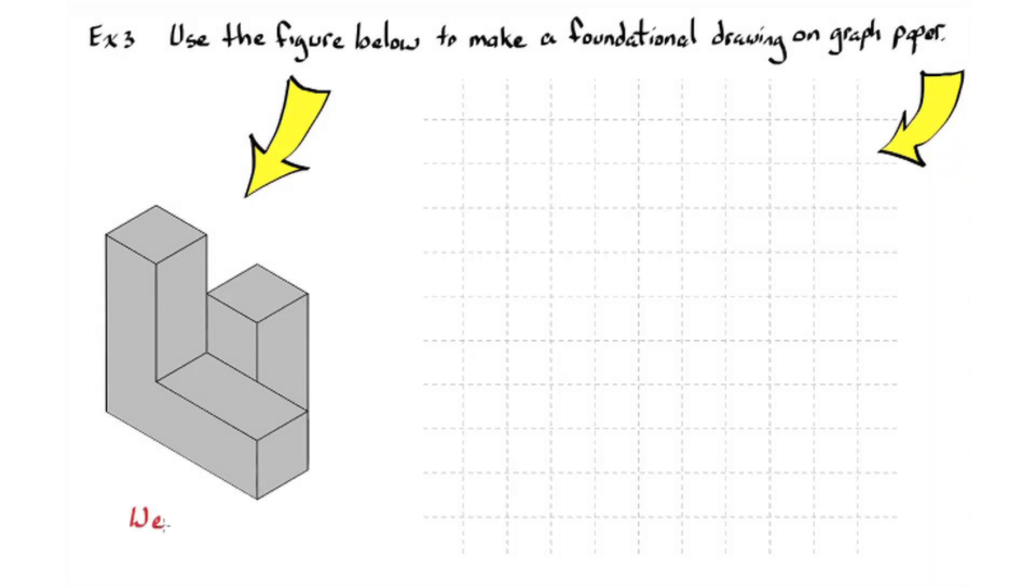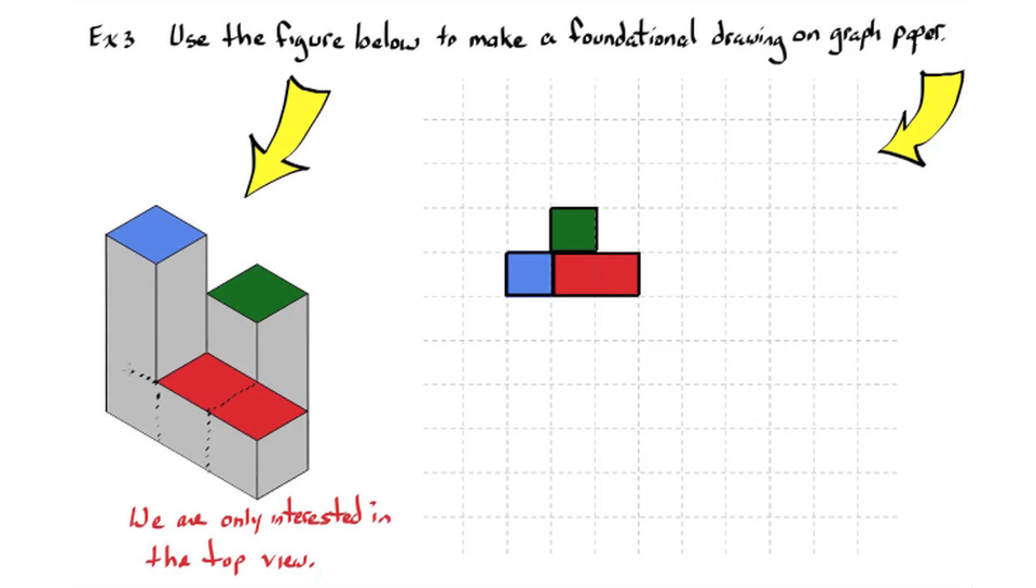Okay, how did you do? We are only interested in the top view. So just like the orthographic view, I want to look down on this figure and determine what shapes I can see. So I see a square with a two by one rectangle next to it, and then another square above that. I have it color coded for you. And then now we need to figure out the height of each part. So the red section is only one unit high. The green section is two units high. And the blue section is three units high. There is our foundational drawing.